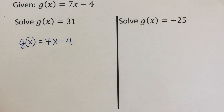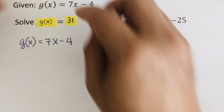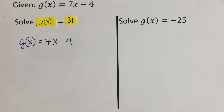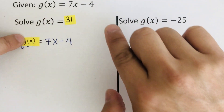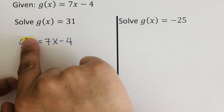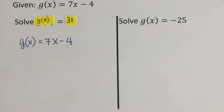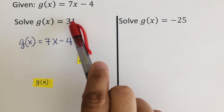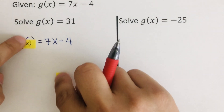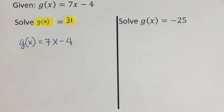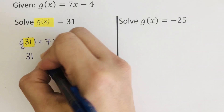Here's what's going on: we're told that g(x) = 31. Since both of these are equal to each other, we can substitute 31 in place of g(x). So instead of g(x) = 7x − 4, we can write 31 = 7x − 4 and solve for x.